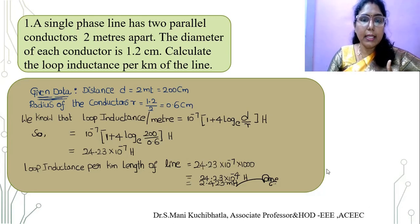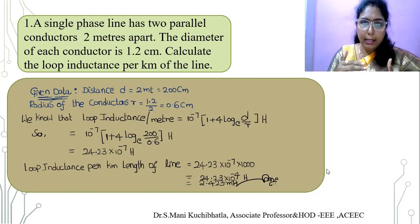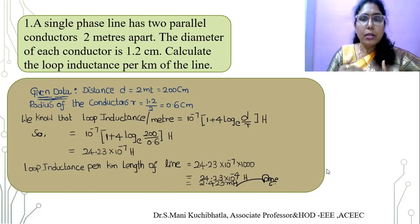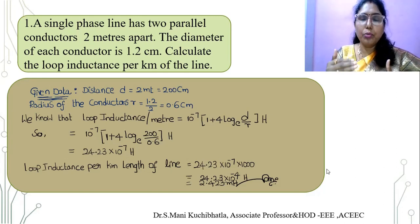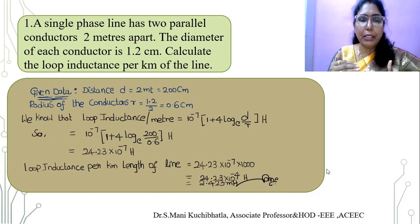We know that the loop inductance per meter formula is 10 to the power minus 7 into (1 plus 4 log to the base e of d/r) henries per meter, where d is the distance between the two conductors and r is the radius of the conductor. Substituting the values: 10 to the power minus 7 into (1 plus 4 log to the base e of 200/0.6) henries. By simplifying, we get 24.23 into 10 to the power minus 7 henries.